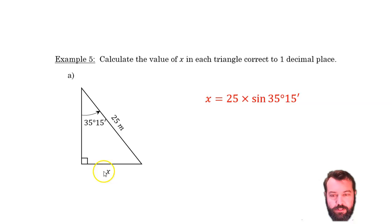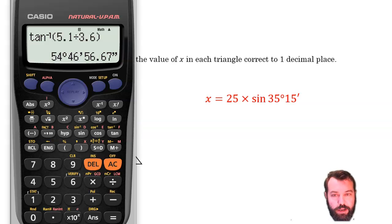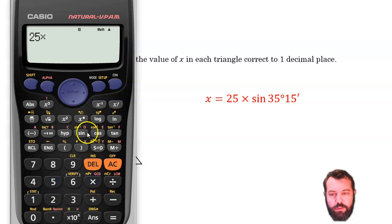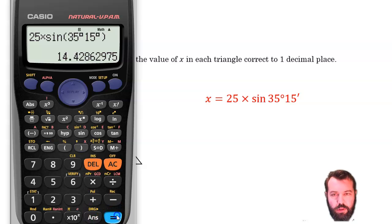So x is the hypotenuse, 25 times the sine of the angle, 35 degrees 15 minutes. Let's pull up the calculator and give that a go. So, 25 times sine, 35 degrees, 15 minutes. Close the brackets.